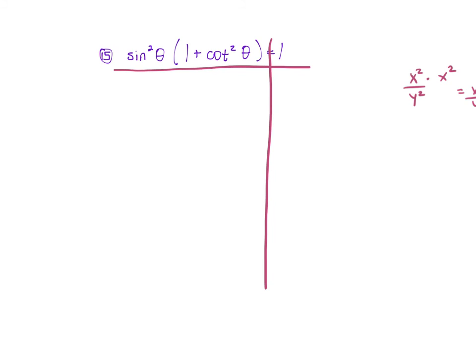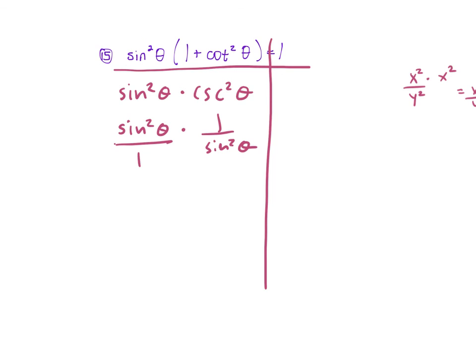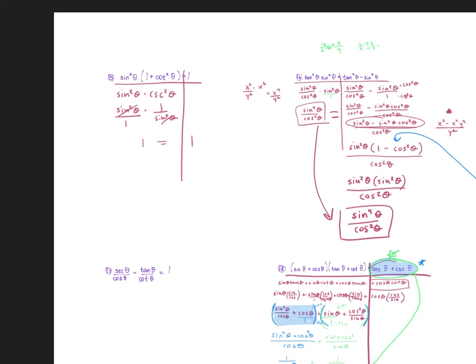One of our identities states: cosecant² θ. We can change cosecant to 1 over sine. So we have sine² θ times 1 over sine² θ. The sines cancel, leaving 1 equals 1.